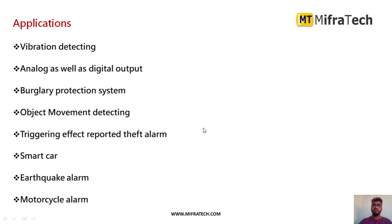What are the applications, where can we make use of this tilt sensor? For vibration detection, it gives output as analog and digital both, in burglary protection systems, object movement detection, trigger effects, theft alarms, smart cars, earthquake alarms, or motorcycle alarms. These are the different areas where you can make use of this tilt sensor.